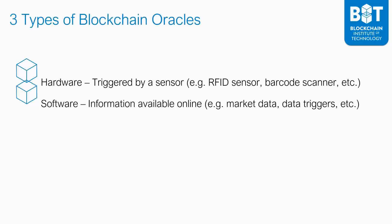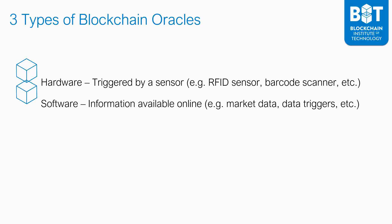Another type of blockchain oracle is software-based, for information that's available online. For example, if there is a shortage of inventory in a specific warehouse, it may trigger an alert that causes a bigger procurement order to create more product. These software data feeds already exist, and you're incorporating them into the blockchain-based supply chain.